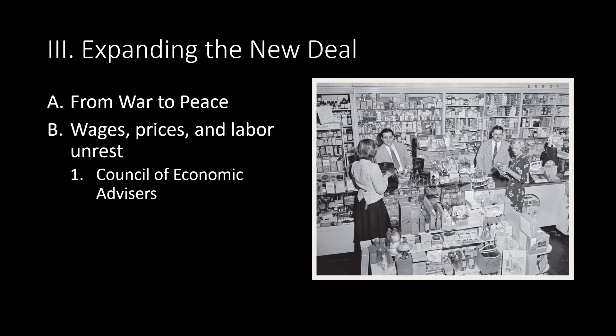When wages were not raised to compensate, several unions went on strike. For the most part, Truman's administration was successful in combating the strikes, but after the 1946 congressional elections, Truman gave up the battle. Following the war, Congress established the Council of Economic Advisors, which was charged with advising the president on the economic health of the nation, increasing the role of the federal government in the economy.